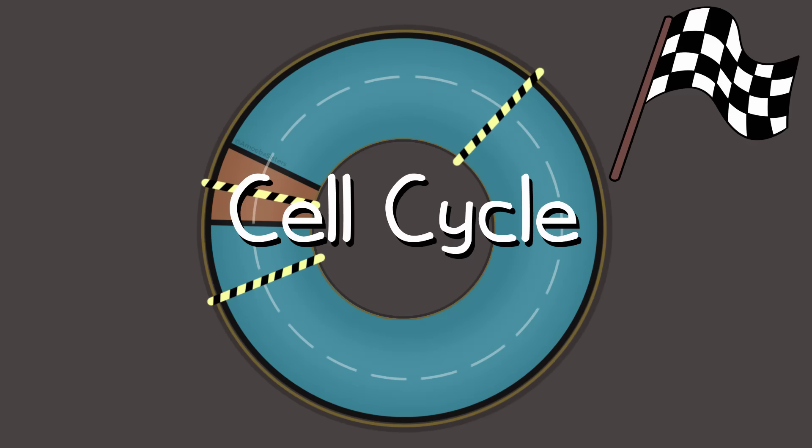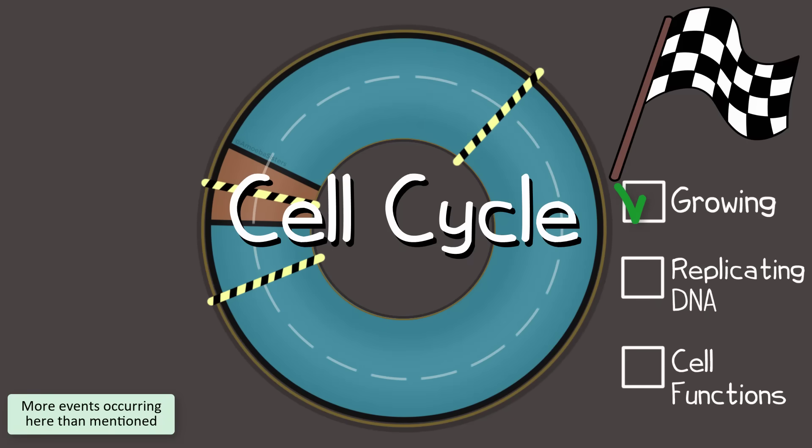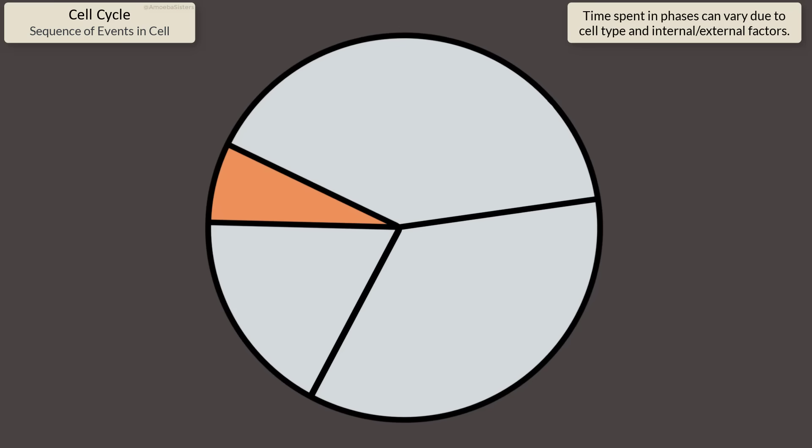Along the cell cycle, there are checkpoints to check that the cell is growing well and replicating its DNA correctly and doing everything it's supposed to do correctly before it divides. To better understand those checkpoints, let's further divide this cell cycle pie chart.